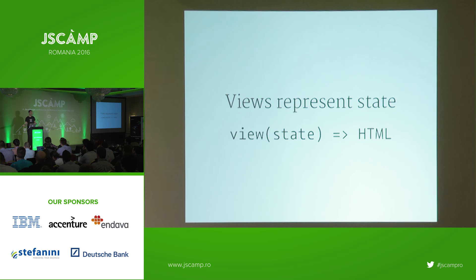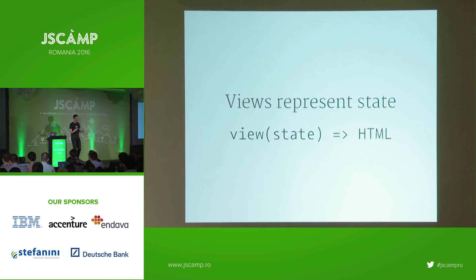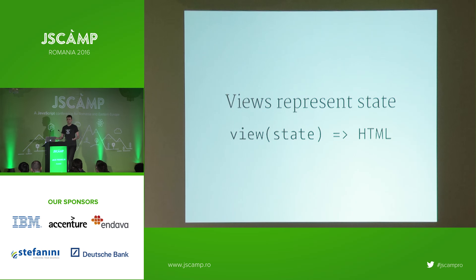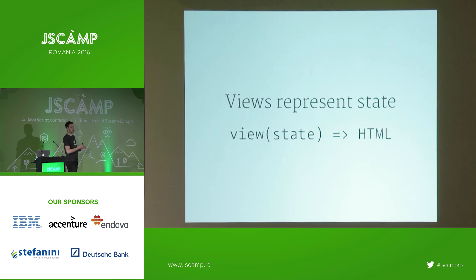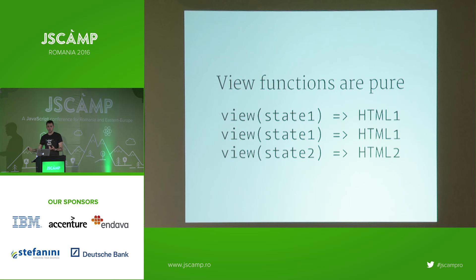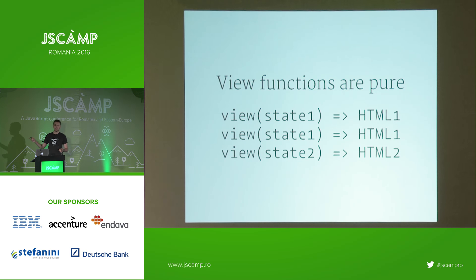Once you have state managed this way, you can think of views as representing state. Your view function becomes a function that takes some state and produces HTML. This is what React popularized — views return virtual DOM, and you very efficiently figure out what to update in the browser to keep the two in sync. View functions are pure: call view with the same state and you get the same resulting HTML. A pure function means all required data is given as inputs — nothing outside can alter its behavior.